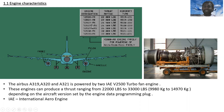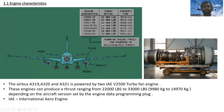Continuing the engine designations: the V2527E-A5 has a thrust rating of 26,500 lbs and is used on the A320-233. The V2527M-A5 has a thrust rating of 30,000 lbs and is used on the A321-131. The V2533-A5 has a thrust rating of 33,000 lbs and is used on the A321-231. So the V2500-A5 engine family powers the A319, A320, and A321 aircraft.